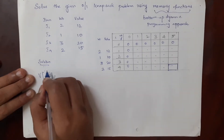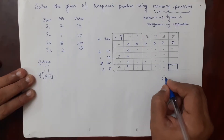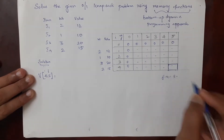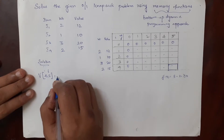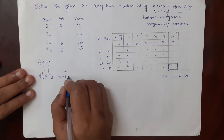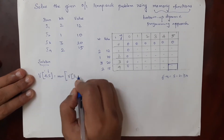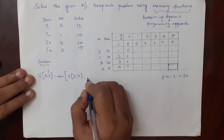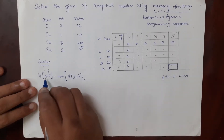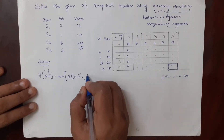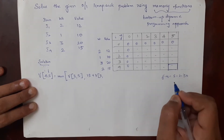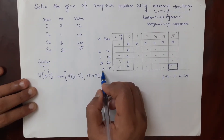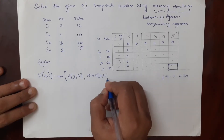So we'll try to find what is v of 4 comma 5. Here i value is 4, j value is 5. Since j minus the weight of item 4 (which is 2) is greater than or equal to 0, we use the formula: maximum of v of i minus 1 = v(3,5), or value of the fourth item (15) plus v of i minus 1 = v(3, j minus wi) = v(3,3).